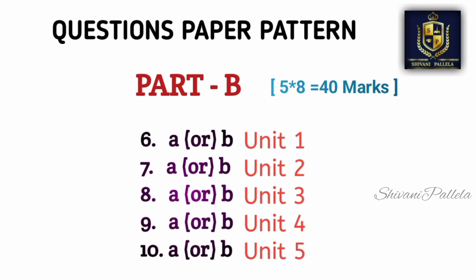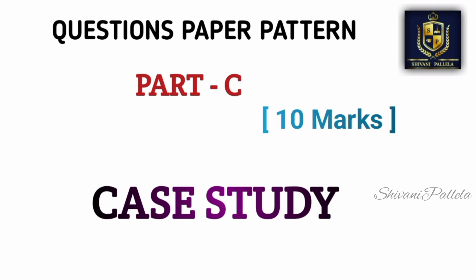If you are perfect with long questions, you can easily attempt Part A and score 10 out of 10. Regarding Part B, five questions need to be attempted, each carrying eight marks, so Part B consists of 40 marks. From the sixth to the tenth question you will have Part B, and in each question you will have an internal choice — like 6a or 6b. The sixth question will come from Unit 1, seventh from Unit 2, eighth from Unit 3, and ninth and tenth from Units 4 and 5.